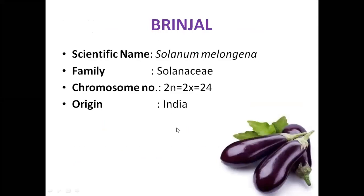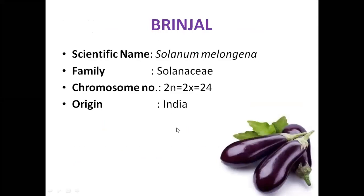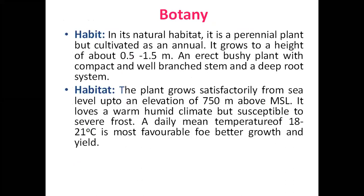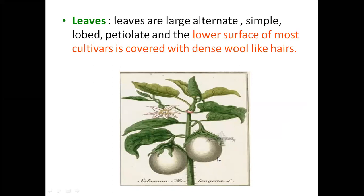Now for brinjal, which is also called a poor man's crop. Generally in most plants, the lower fruits formed first will be bigger in size, and as the plant grows taller the upper fruits will be smaller. In tomato and chili this happens, but in brinjal this character is not much observed.